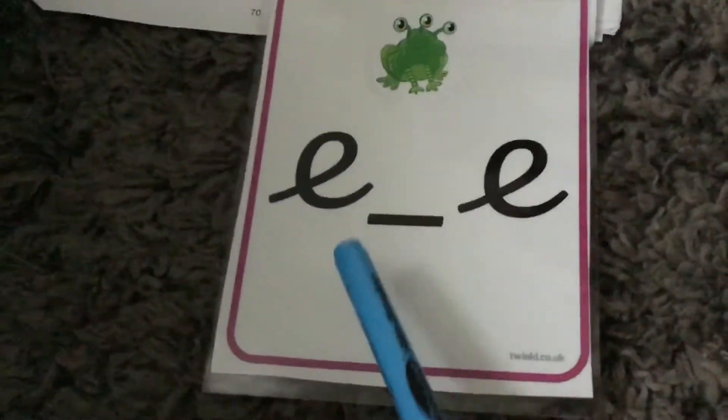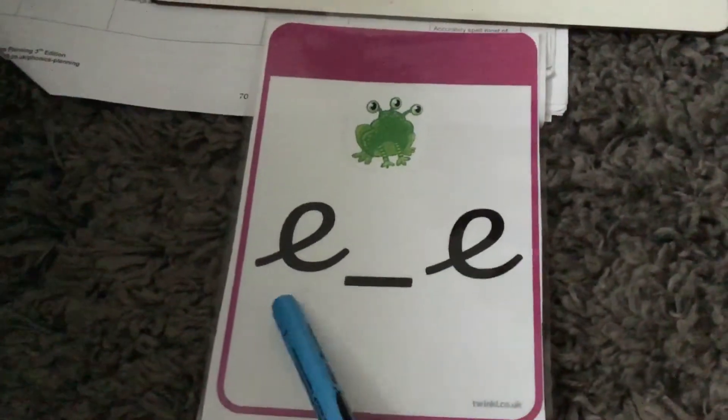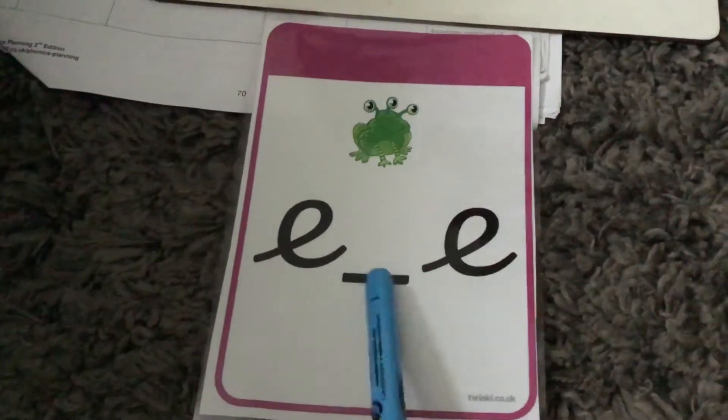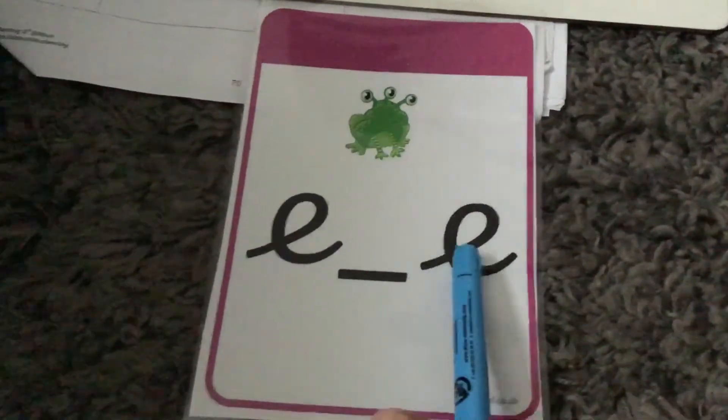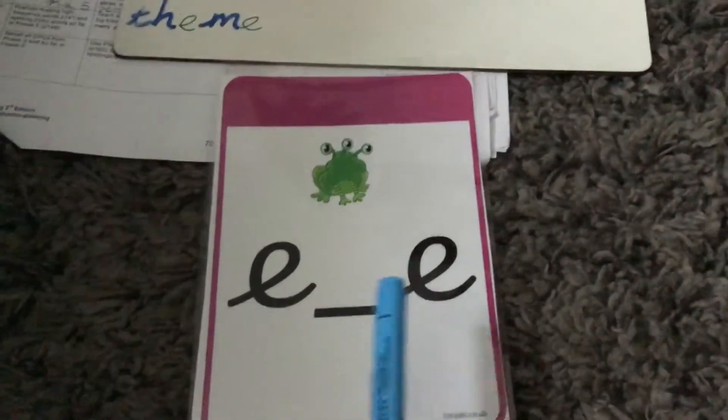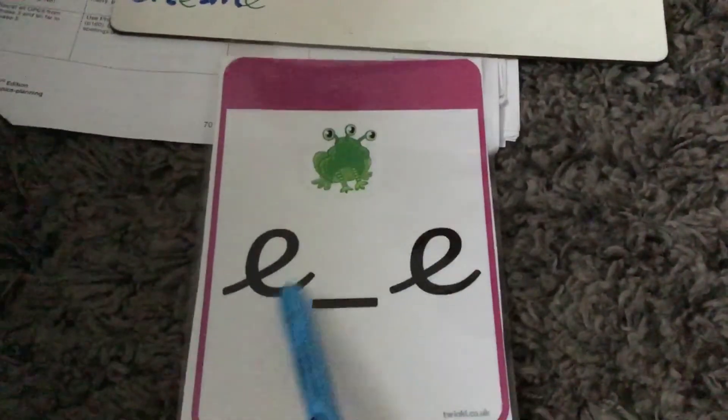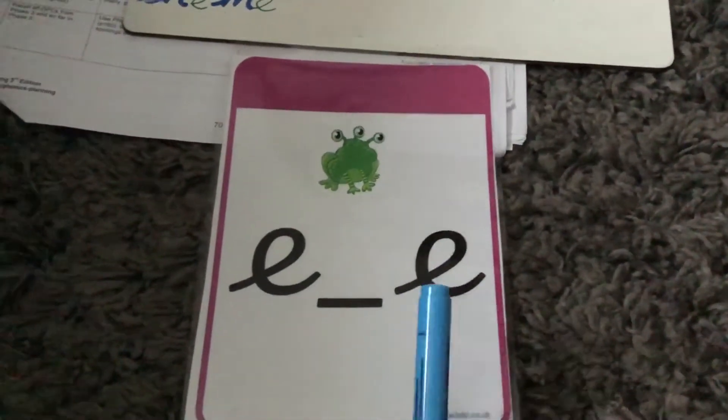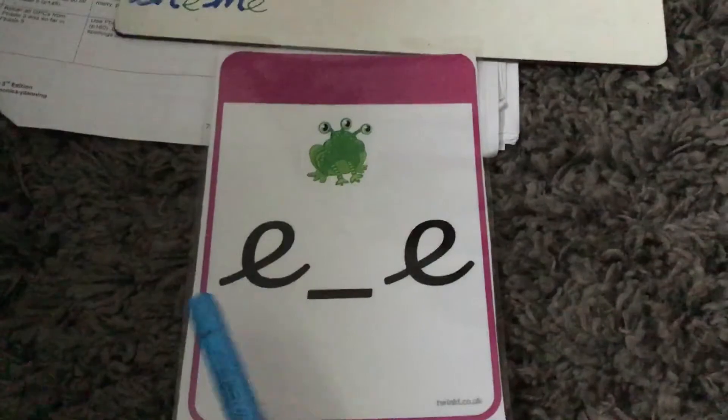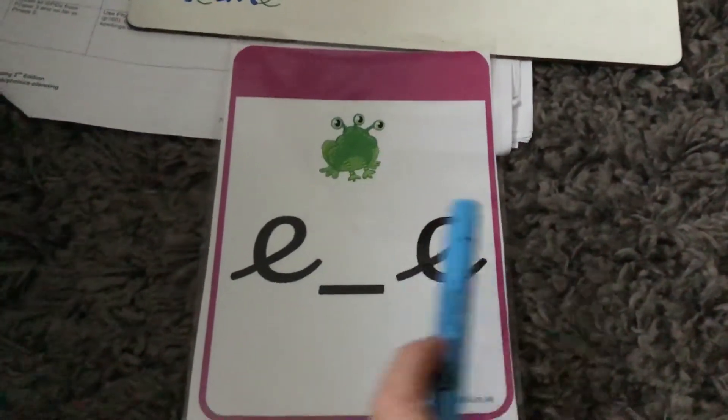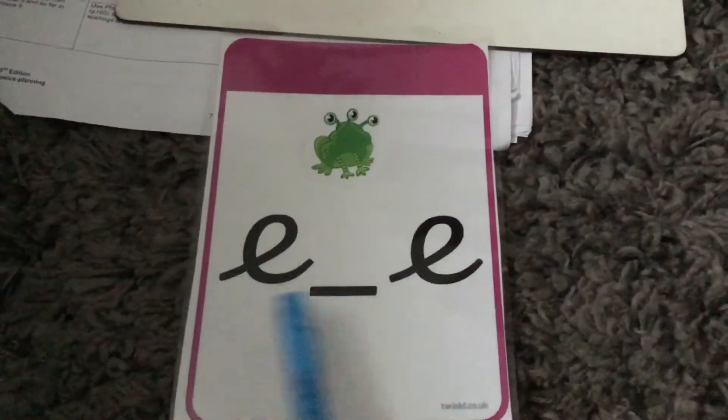So this is another way that we can write the E sound. We've got the E. We've got this because it shows a space. And then we've got another E at the end. It is a digraph because we've got two letters that are making one sound. The two letters E and the E. The one sound is the E sound.